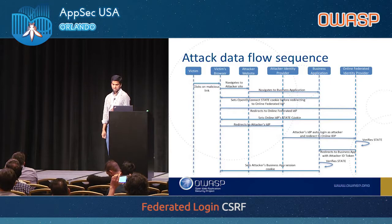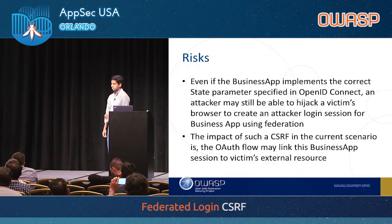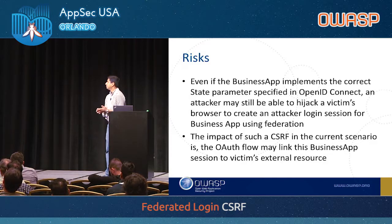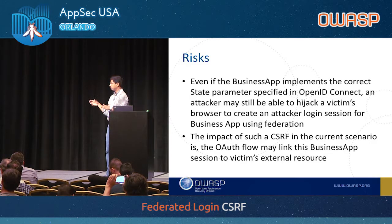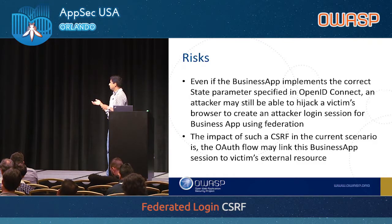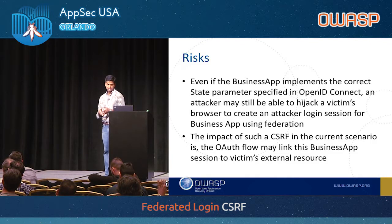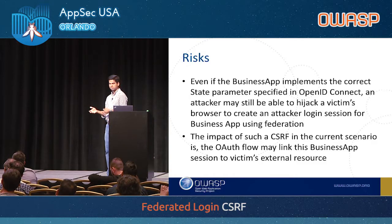The end result is that the attacker has established a session for the business application in the victim's browser. The risk is the same as in the OpenID Connect CSRF case: if the OAuth consent flow is initiated, the victim's social profile gets linked to the attacker's identity, and all the attacker has to do is log into the business application with their own identity to get access to the victim's resources.